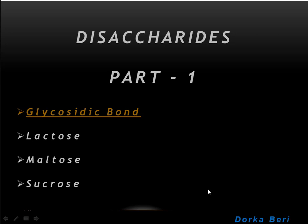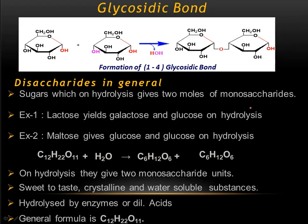Hello dear friends, let's discuss today about disaccharides. I have divided that into four parts. In the first part we will learn how the glycosidic linkage is formed, and in the next sessions we will see popular disaccharides like lactose, maltose, and sucrose. So let's go to our session.